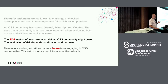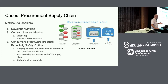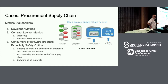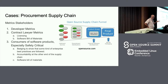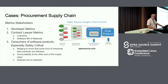Risk informs us about how much risk a project might pose in a community, and we divide risk into a number of different key stakeholders. From one perspective, we think about risk from a developer's point of view — is this a project that if I invest my time in, I'm going to learn something useful? A contract lawyer might think about licensing: does this piece of software contain licenses that, if I include it in my product, will force my product to all be GPL?